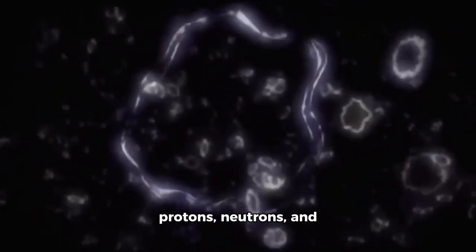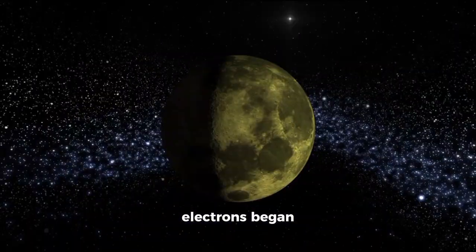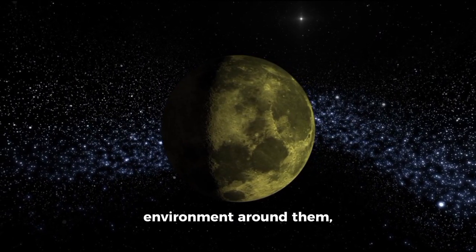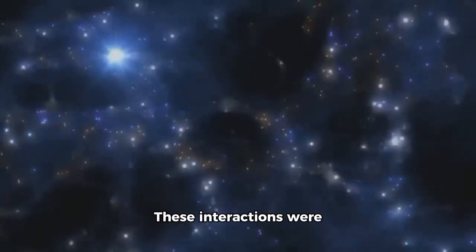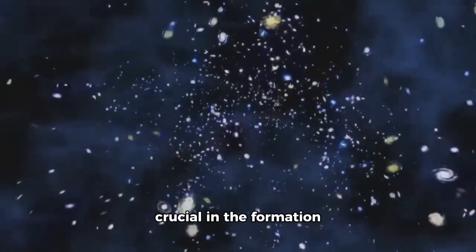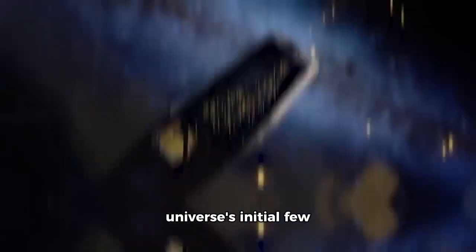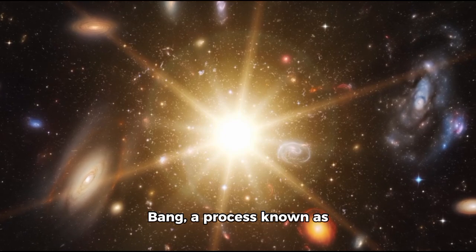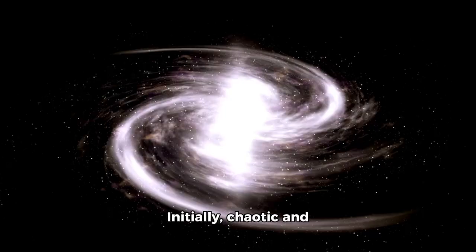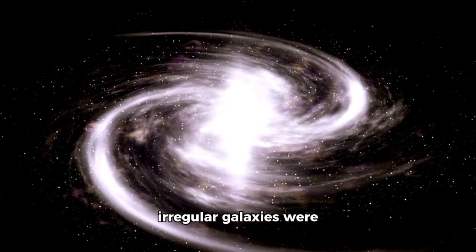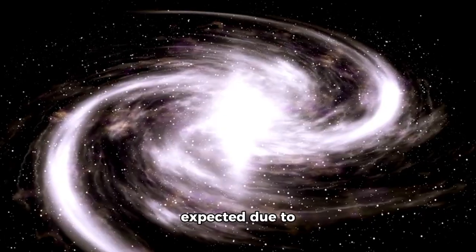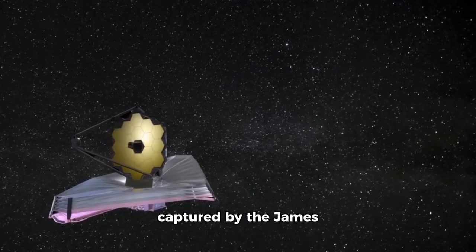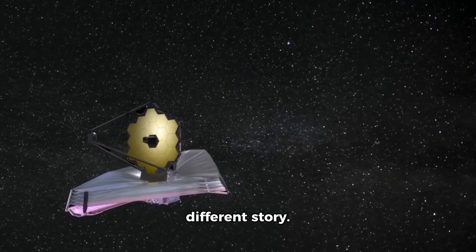As the universe cooled and expanded, particles like protons, neutrons, and electrons began interacting with the environment around them, including light and energy. These interactions were crucial in the formation of matter during the universe's initial few minutes following the Big Bang, a process known as nucleosynthesis. Initially, chaotic and irregular galaxies were expected due to frequent collisions. However, the galaxies captured by the James Webb Telescope tell a different story.